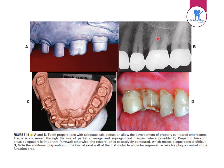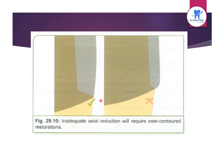While preparing furcation areas adequately is very important, otherwise the restoration becomes excessively contoured, making plaque control difficult. Additional preparation of the buccal axial wall allows improved access for plaque control in the furcation area. Inadequate axial reduction will require an over-contoured restoration.